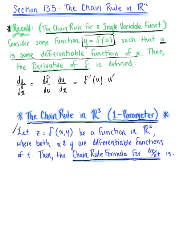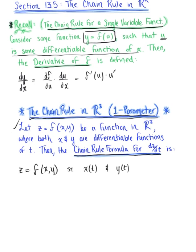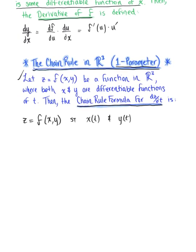We already know that z equals f of x, y — a function of two independent variables — such that x and y are both functions of t. We can think of this as x of t and y of t. We can even rewrite this function by plugging in these parameterized curves, saying equivalently that z equals f of x of t, y of t, where t is our arbitrary parameter, some real number.